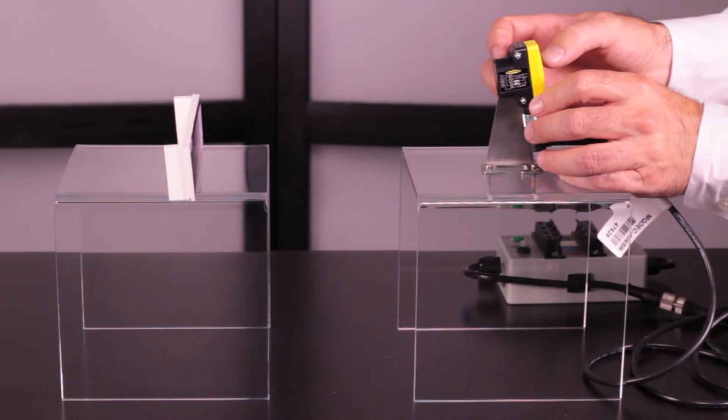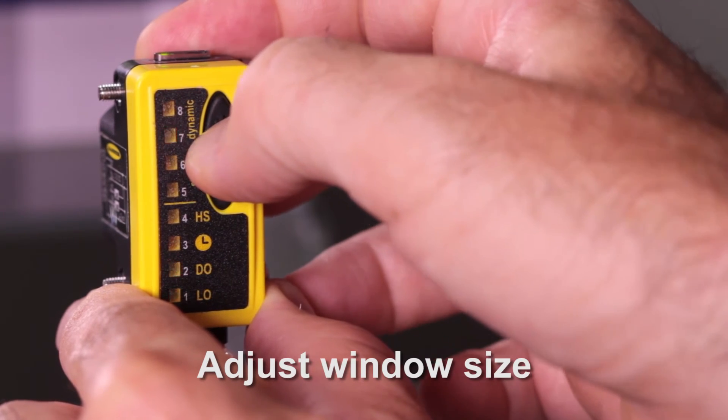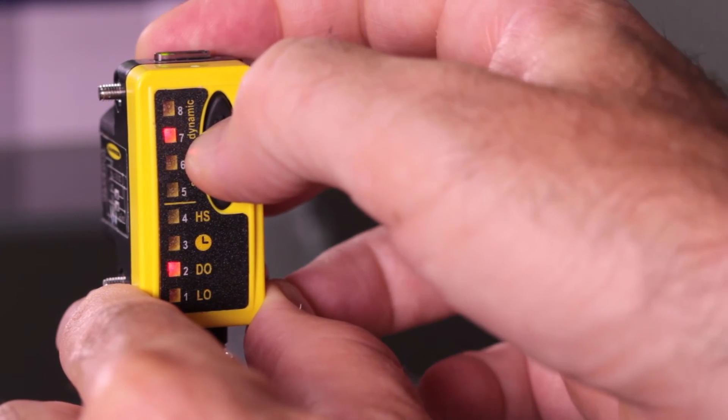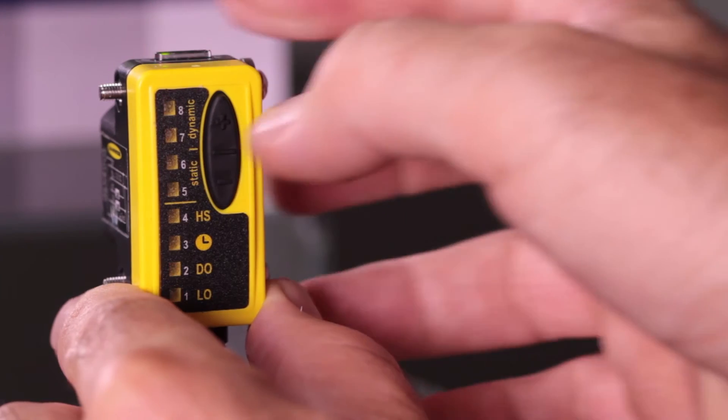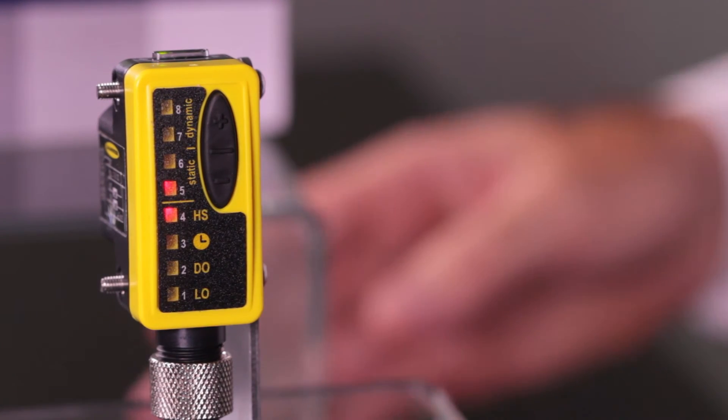To increase the window size, click the plus button. Notice the number 8 LED represents the strongest signal and the number 1 LED represents the weakest signal.